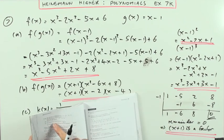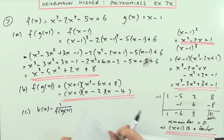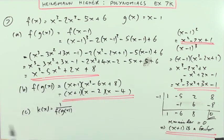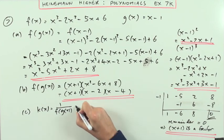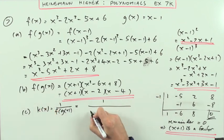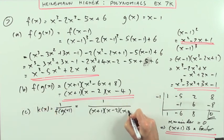Now part C says a function k is such that k of x is 1 over f of g of x. For what values of x is this function not defined? Well what is that? That's just going to be 1 over this thing here. So it's 1 over (x plus 1)(x minus 2)(x minus 4).